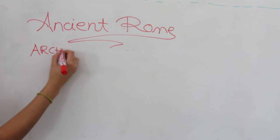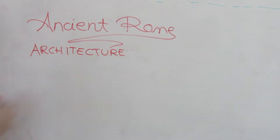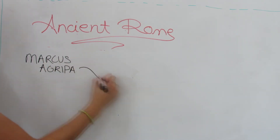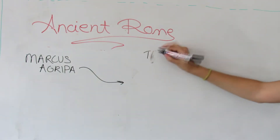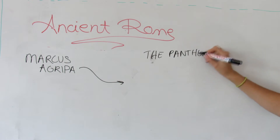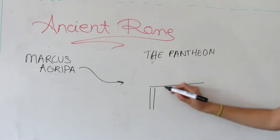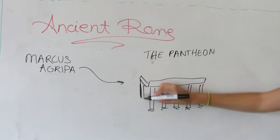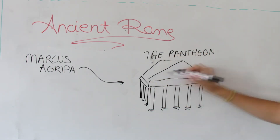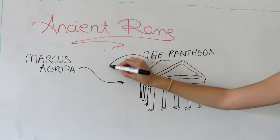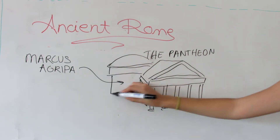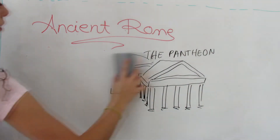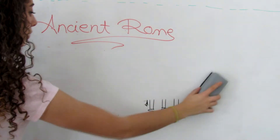What about the architecture of ancient Rome? The Pantheon is a building in Rome, commissioned by Marcus Agrippa. The building is circular with a portico of large granite Corinthian columns under a pediment. A rectangular vestibule links the porch to the rotunda, which is under a coffered concrete dome with a central opening to the sky. Almost 2000 years after it was built, the Pantheon's dome is still the world's largest unreinforced concrete dome.